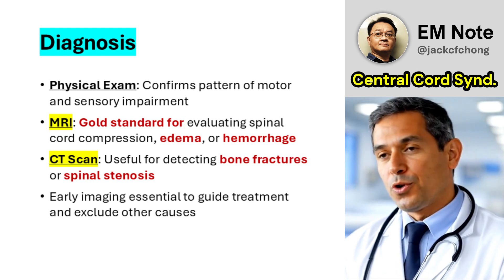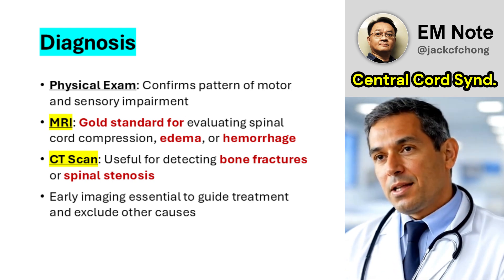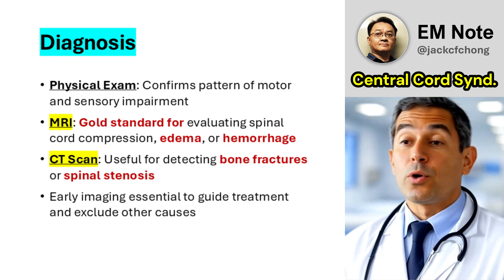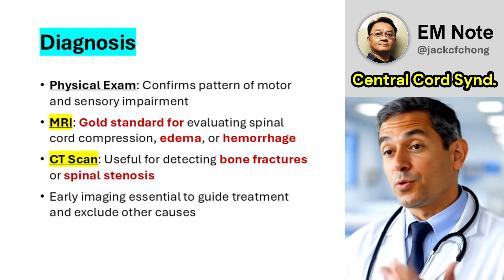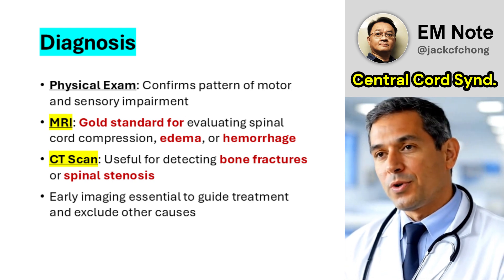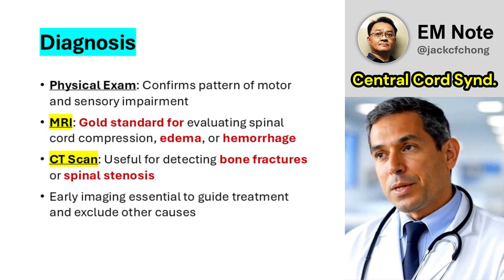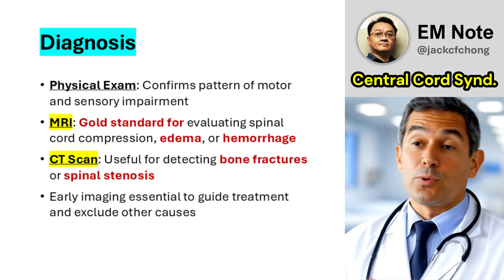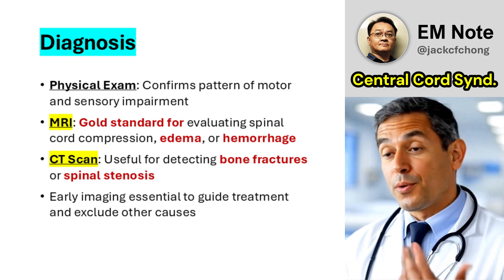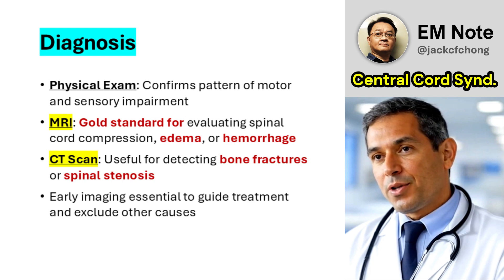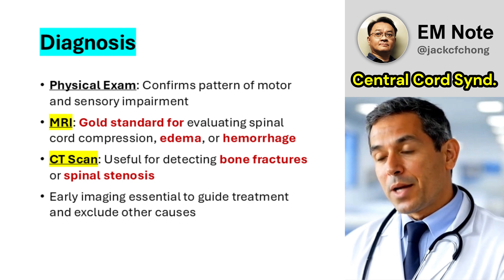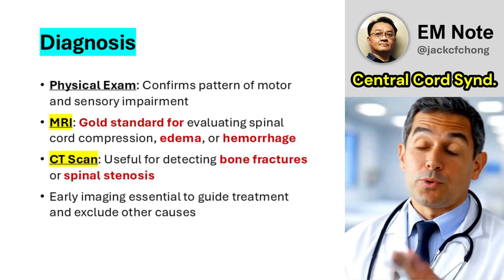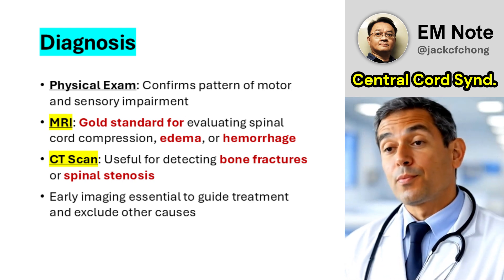MRI is the gold standard for visualizing spinal cord compression, edema, or hemorrhage. CT scan identifies bony abnormalities such as fractures or spinal stenosis. Early imaging is critical to guide treatment decisions and rule out other pathologies such as tumors or vascular malformations.